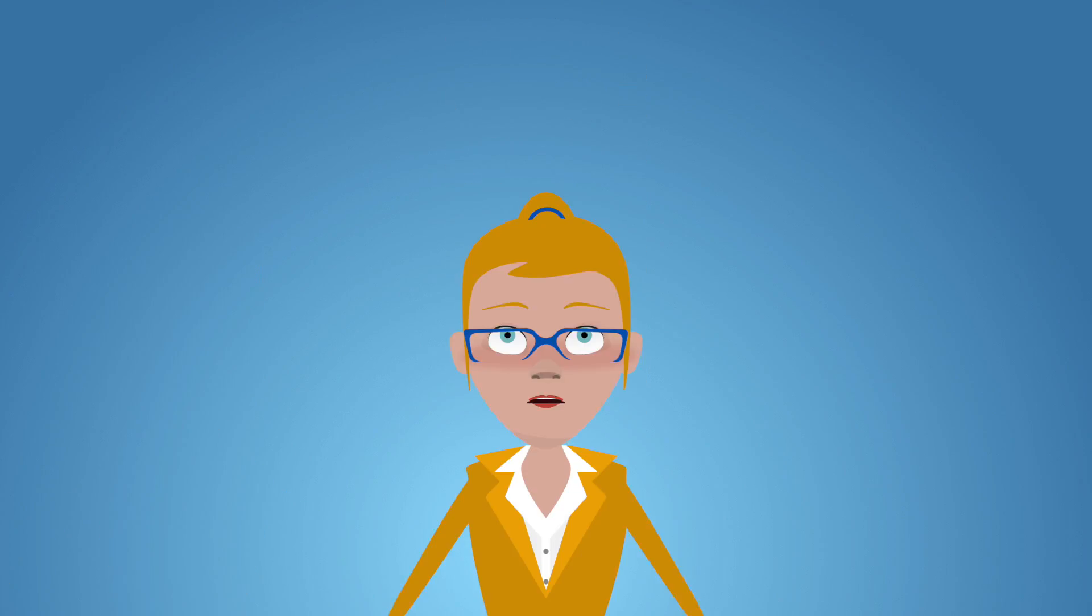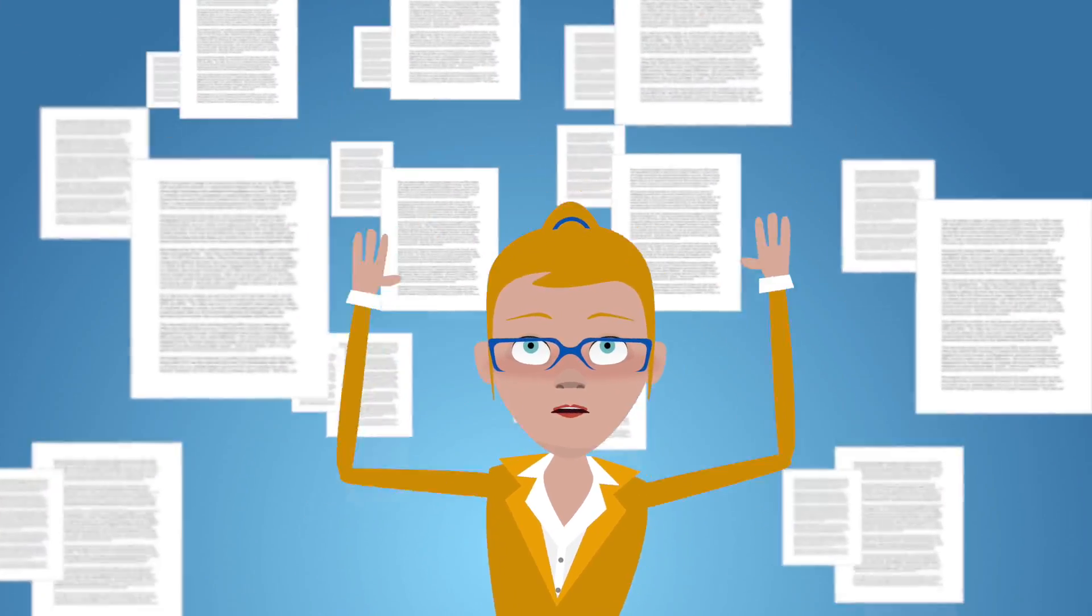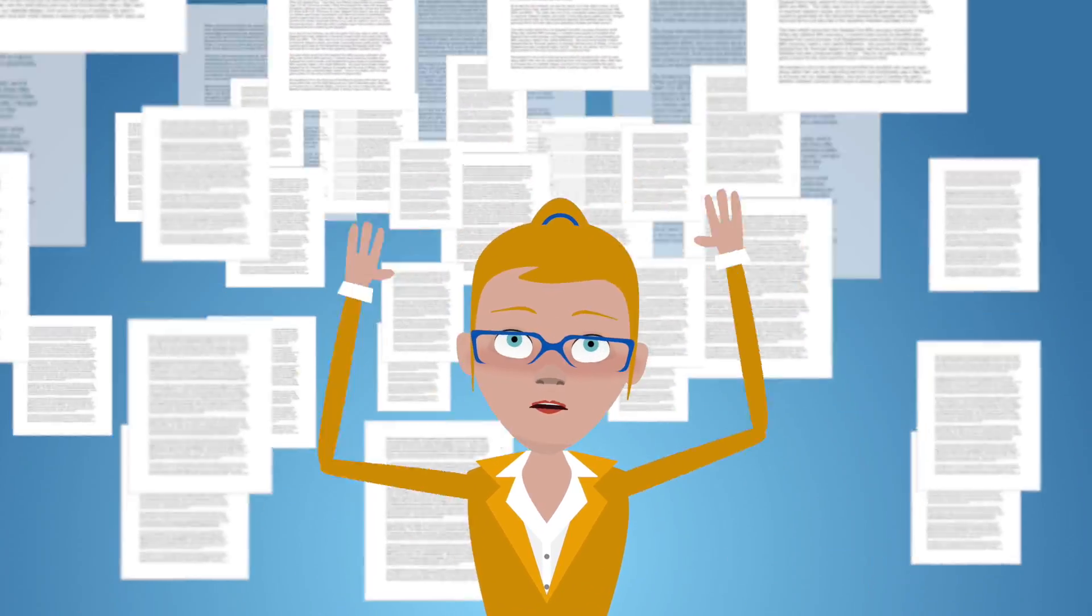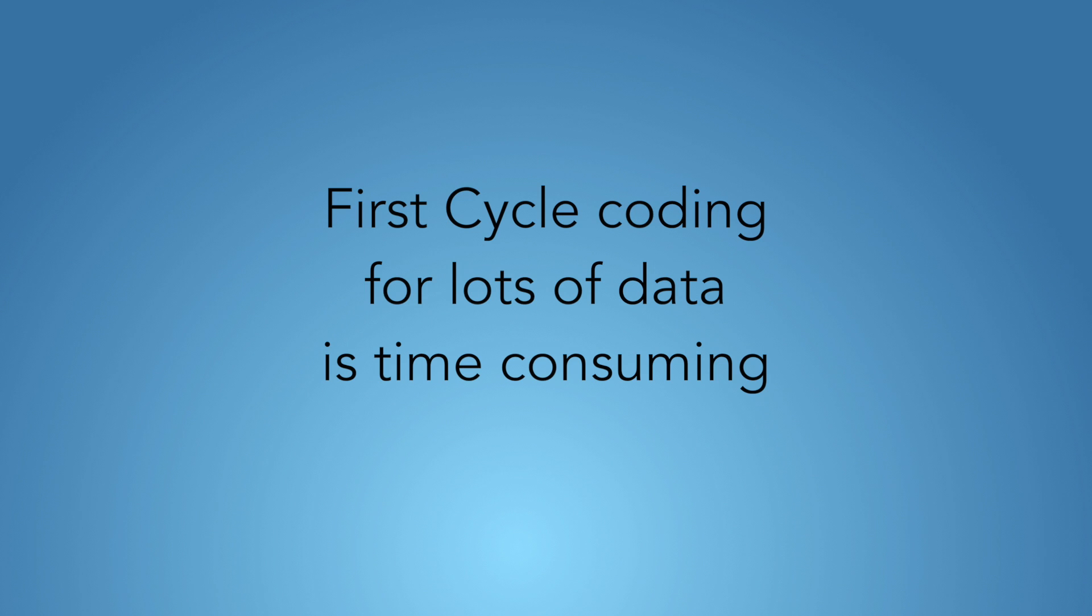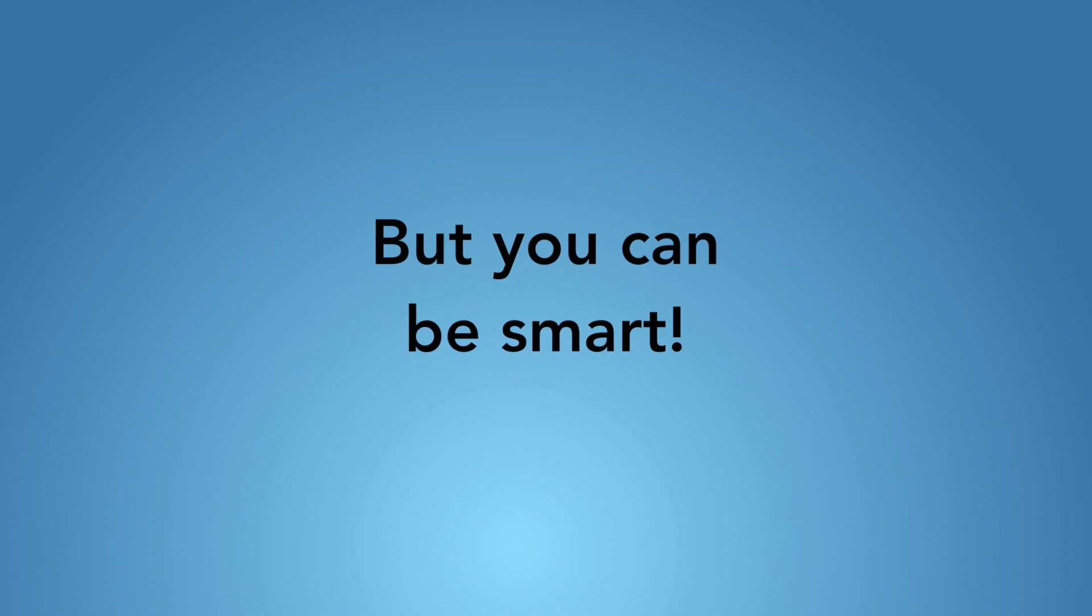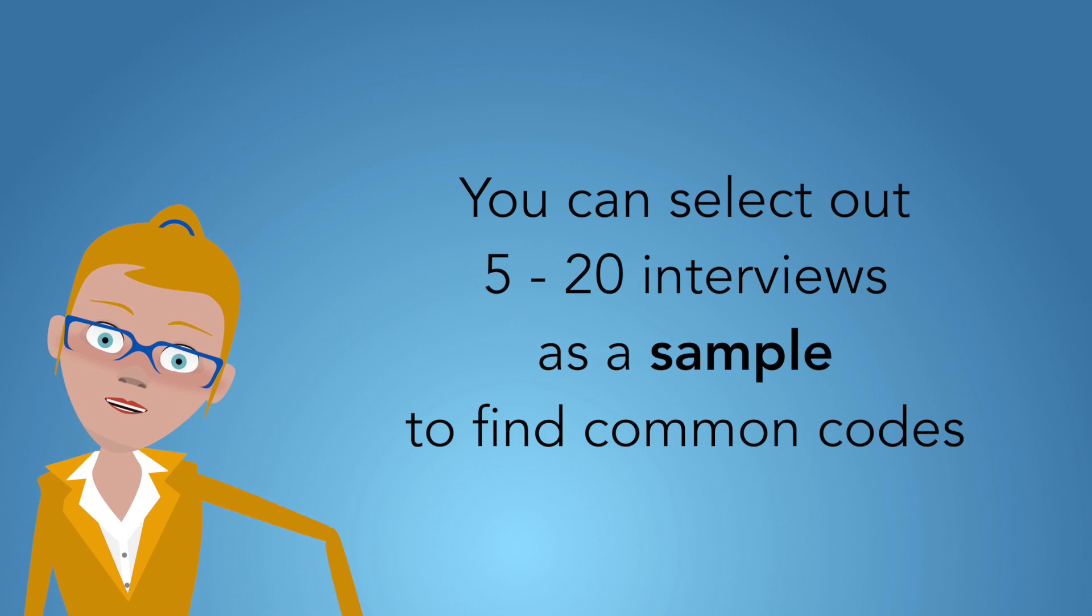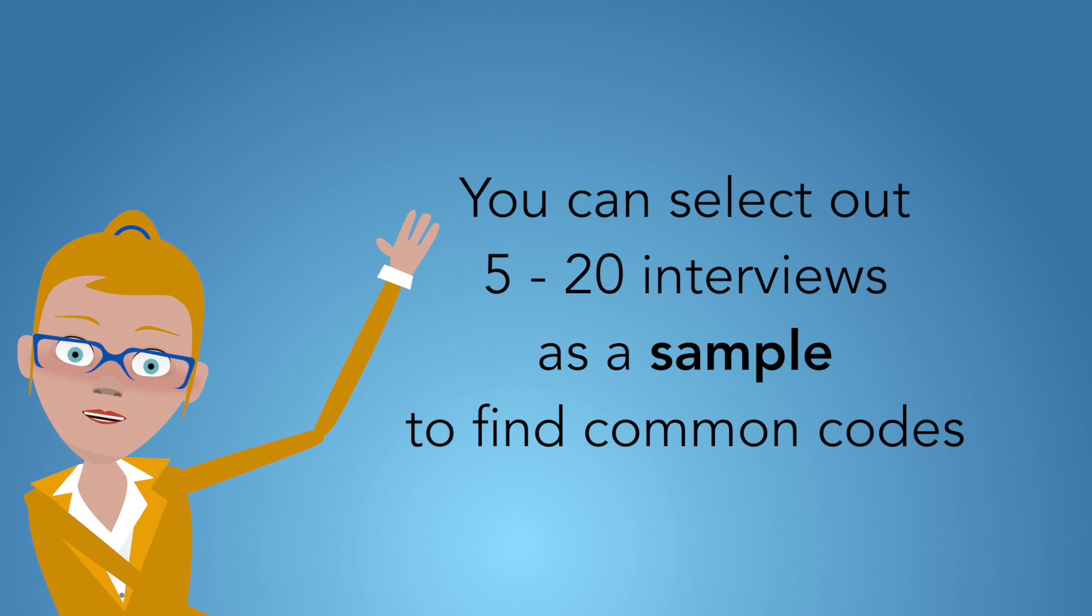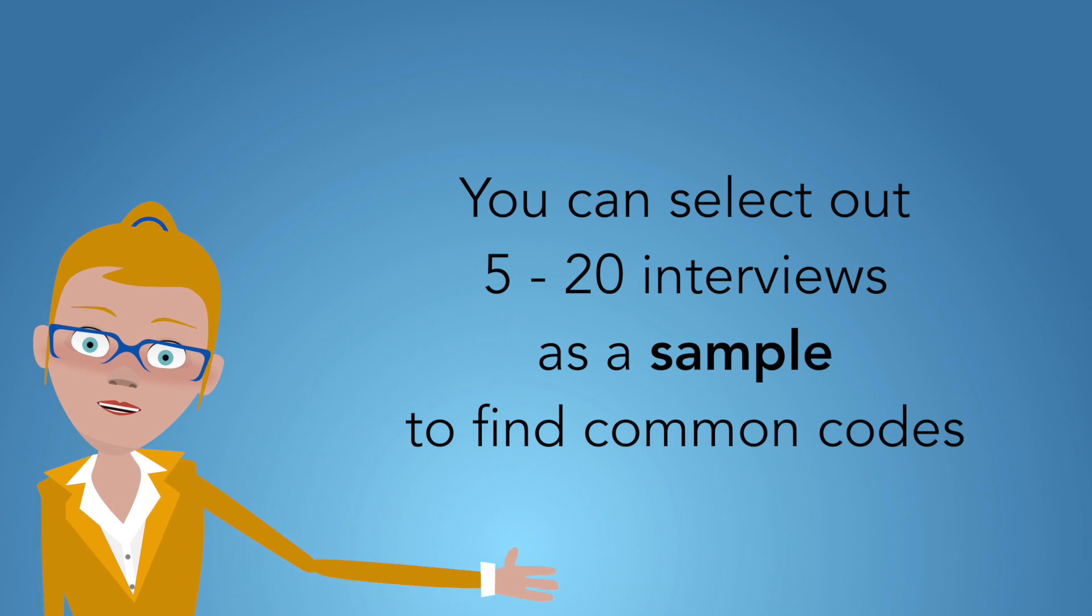One thing to think about is if you have 15, 30, 150, 2000 interviews, you don't want to do first cycle coding through all of those interviews first. It's not always necessary. Your first cycle codes you could do if you select out 5 to 20 interviews. You can select them out and commit to doing first cycle coding through those first five to 20 interviews.